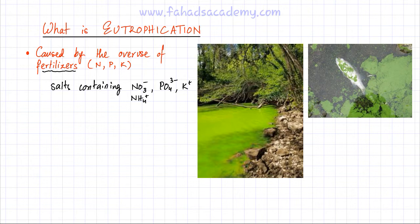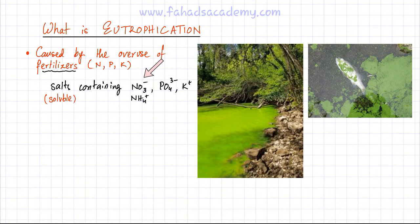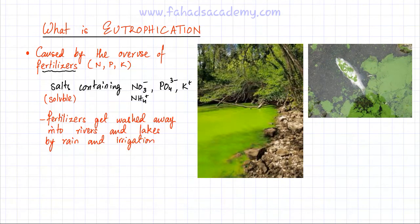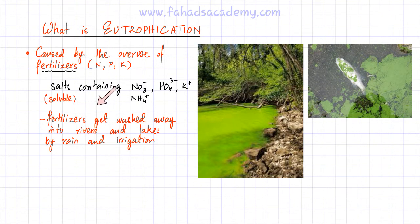These salts need to be very soluble, because plants absorb water and if you want to deliver N, P, or K elements to plants, those salts must dissolve in water so plants can absorb them. Since fertilizers are very soluble, when you do irrigation or when it rains, not all of the fertilizer is absorbed by plants — a lot of water runs off the field and ends up in rivers and lakes, washing the fertilizers away.